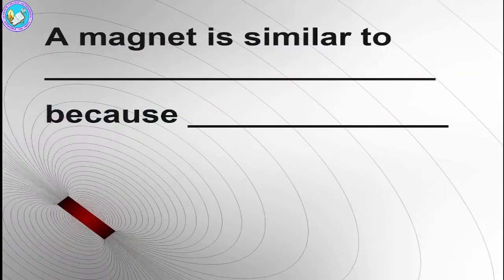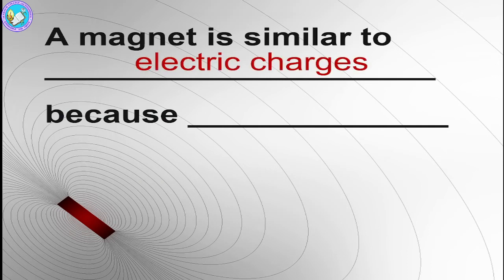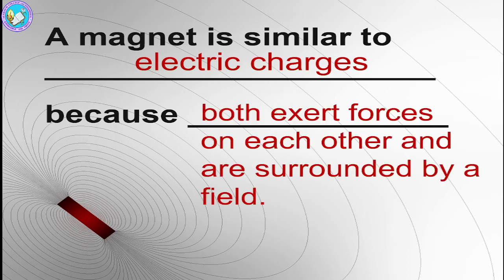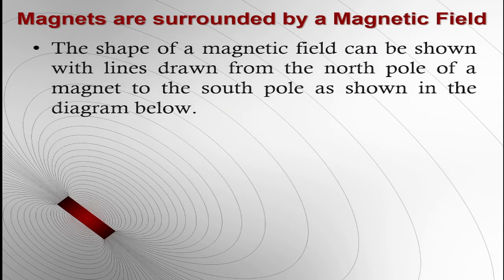The magnet is similar to electric charge because both exert forces on each other and are surrounded by a field. The magnet is like electric charges because in the end it is exerting some forces between objects, so when it is surrounded by a magnetic field.